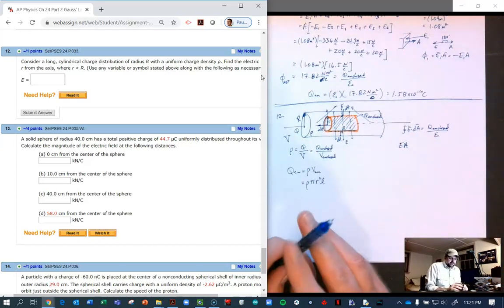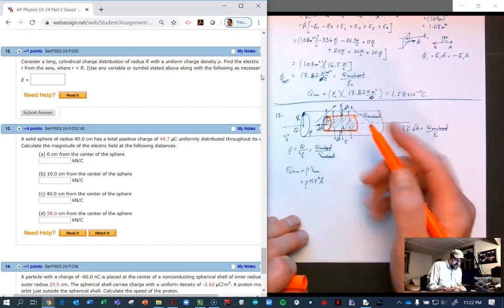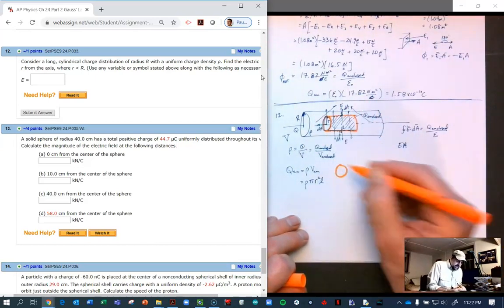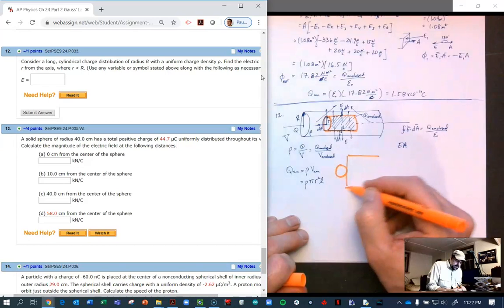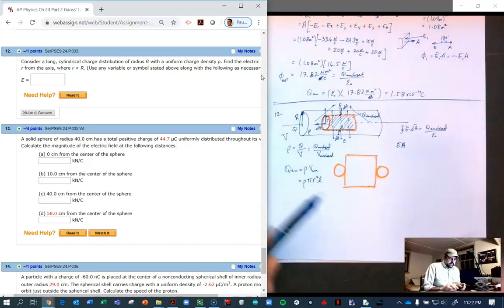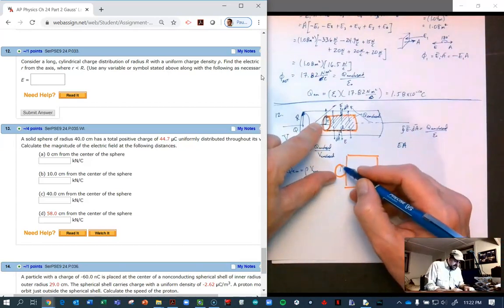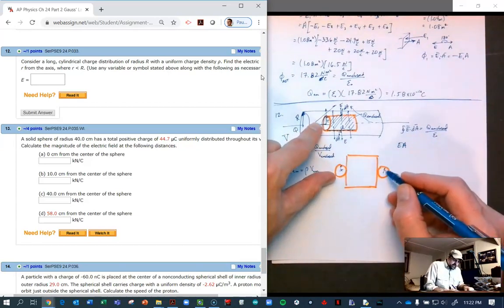Let's draw what that looks like. We take our Gaussian surface, there's the end cap, there's the wrapper, and there's the other end cap there. The circle and the circle are the same.